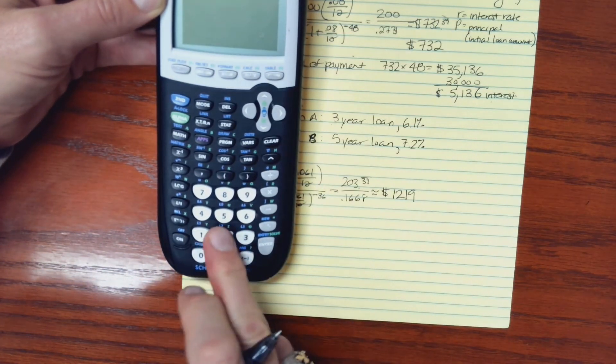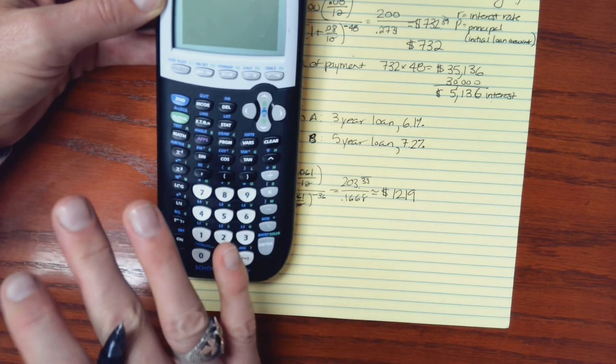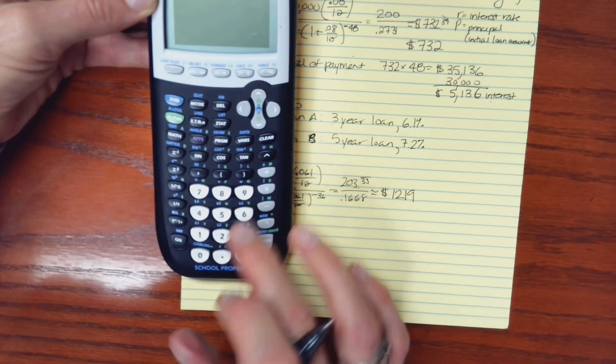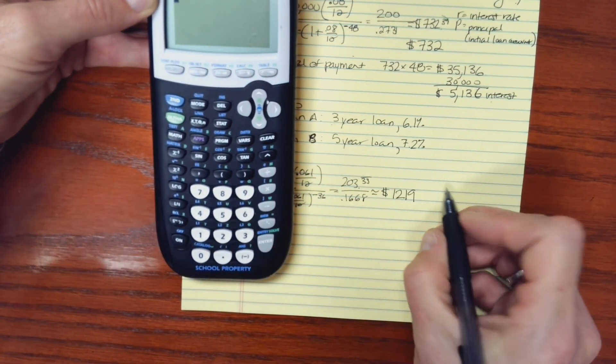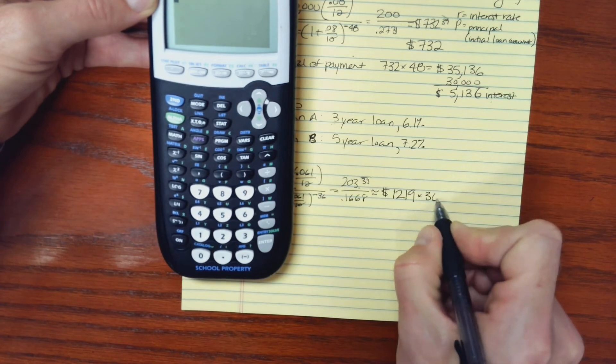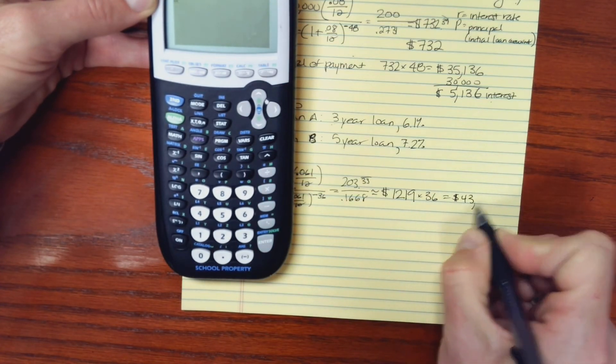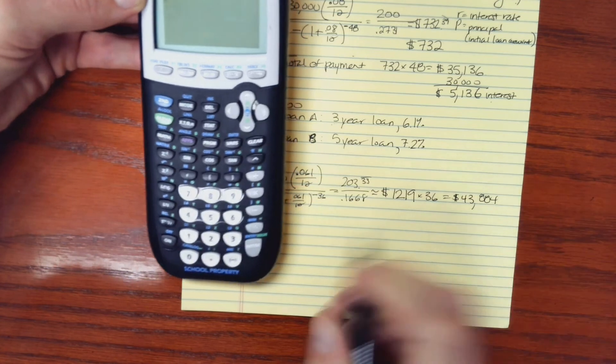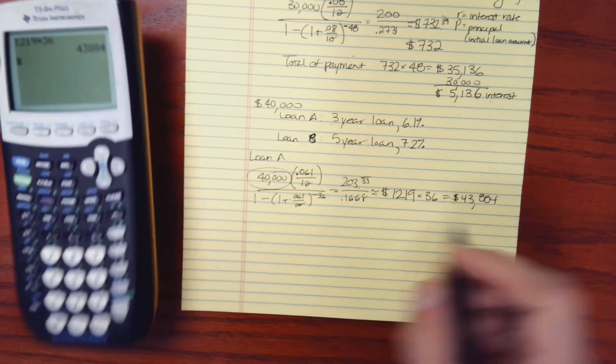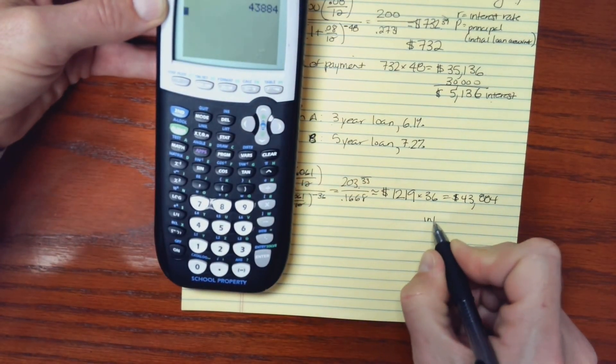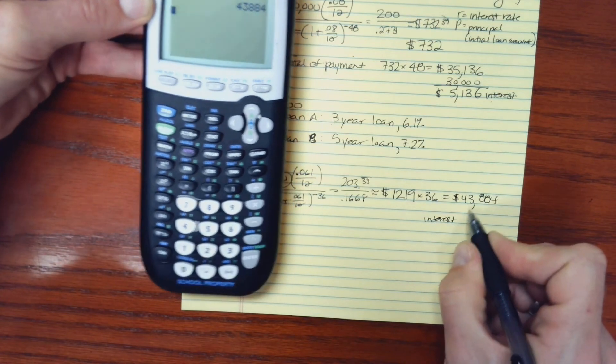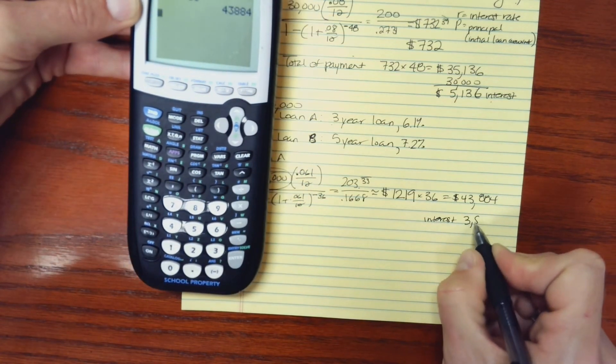Now, if I take 1,219 times 36, that'd be the total of my payments. And that would give me $43,884. Now the loan amount was $40,000. So the interest is the difference. In other words, the $3,884.